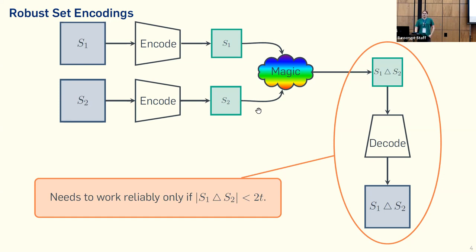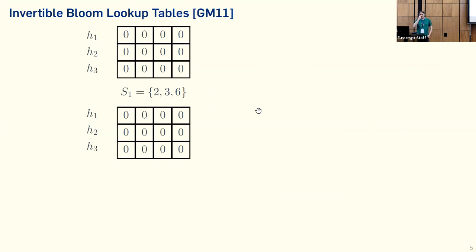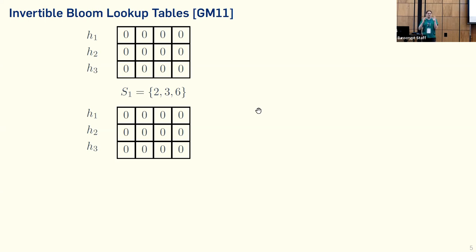The big question is how do we construct this robust set encoding. For this we use invertible bloom lookup tables, first introduced by Eppstein and Mitzenmacher in 2011. These are basically a way to encode sets such that if the set is small, you can recover it. We have a set S1 encoded in basically two matrices, initialized with all zeros. The size of this matrix depends on statistical parameters — essentially the threshold needed for our predicate. For each row of these matrices, we choose a 4-wise independent hash function. We map each element of the set into these matrices using these hash functions, which in each row give us one index where we put this element.